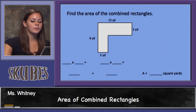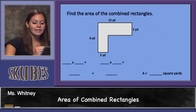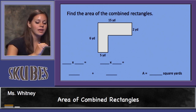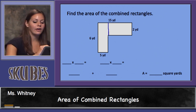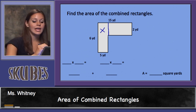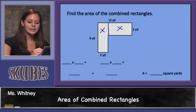Let's take a look at this example. In this example, we cannot see the two sections defined. We need to divide this shape into two separate rectangles. There are different ways we can divide it, but let's divide it here and find the area of the first rectangle and add it to the area of the second rectangle.